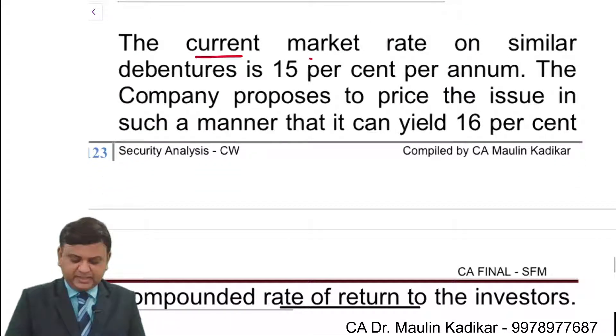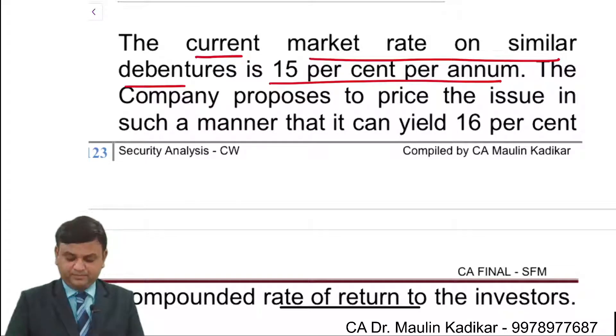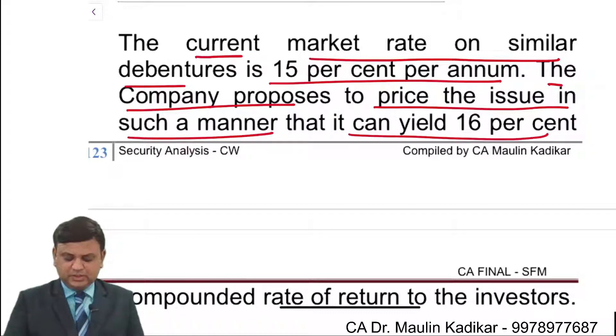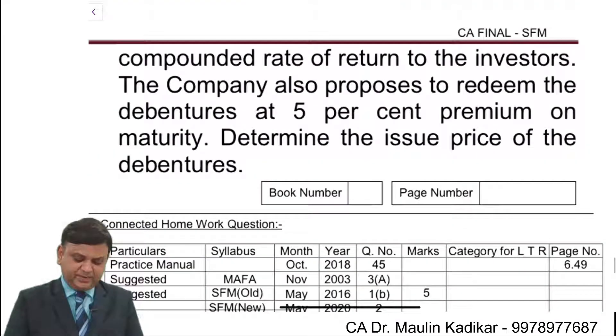The current market rate on similar debentures is 15% per annum. The company proposes to price the issue in such a manner so that it can yield 16% compounded rate of return to the investors.